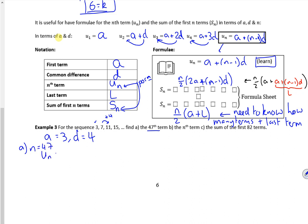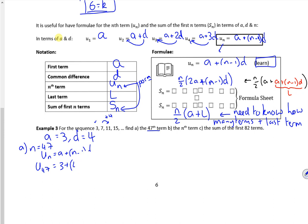So n is 47. It's always good practice to write down the formula. So u47 is 3 plus 47 minus 1 times 4. So u47, with my dodgy looking writing, will be 187.